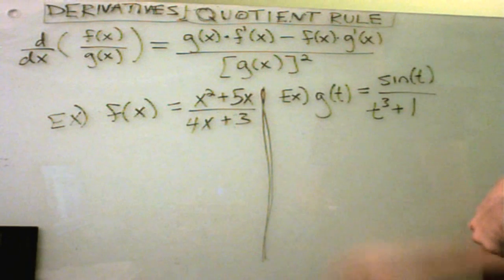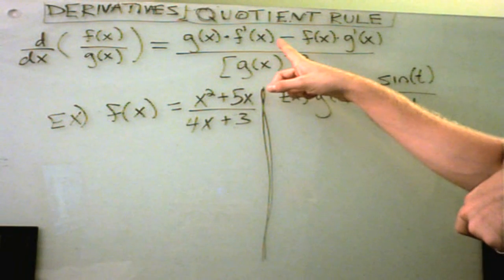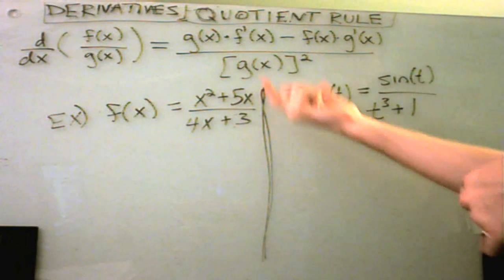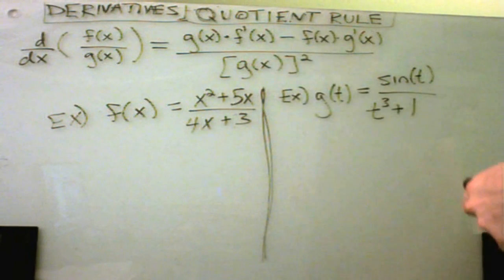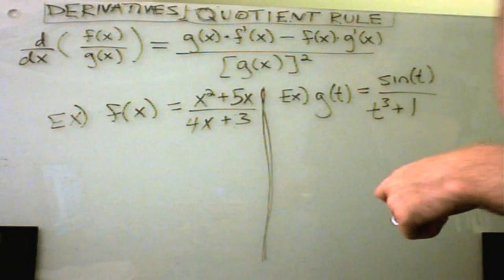Unlike the product rule that had a plus in it, since there's a minus here, you're going to have to be exact about the order. If you get these flip-flopped, you're going to be off by a sign, and you definitely don't want that. So, to illustrate this,